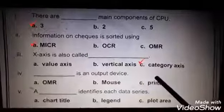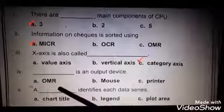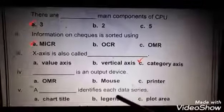Number 4: Dash is an output device. A: OMR, B: Mouse, C: Printer. Right answer is C, printer.